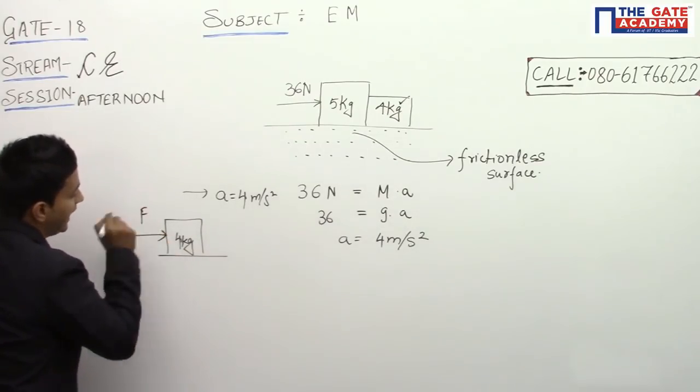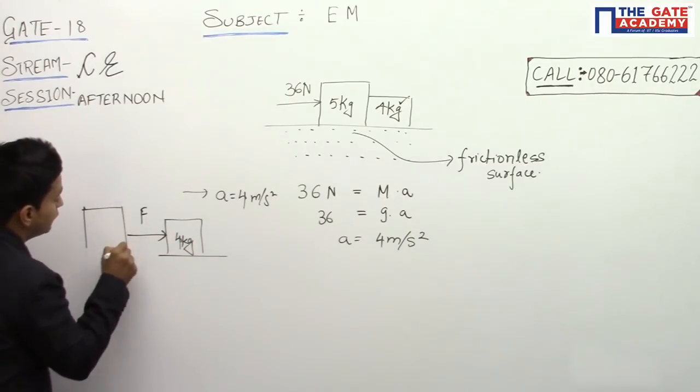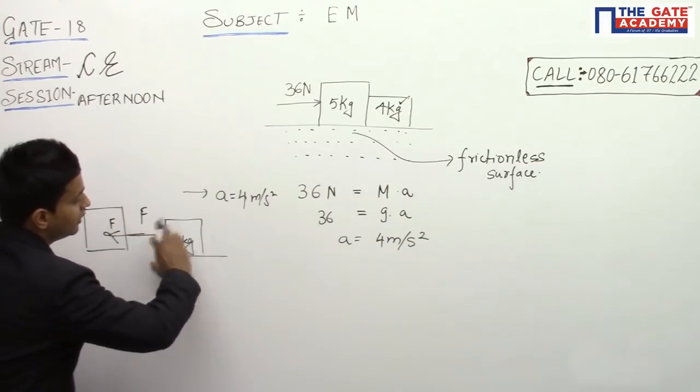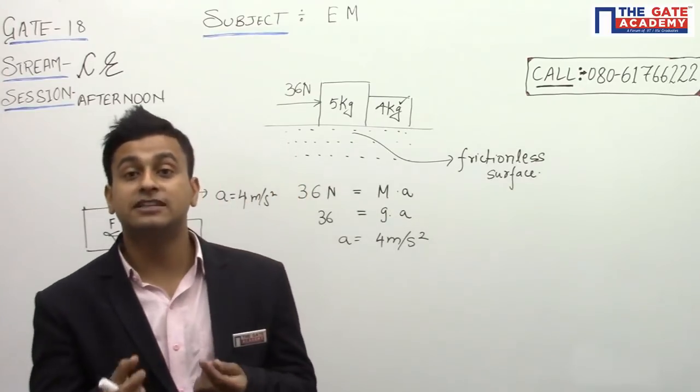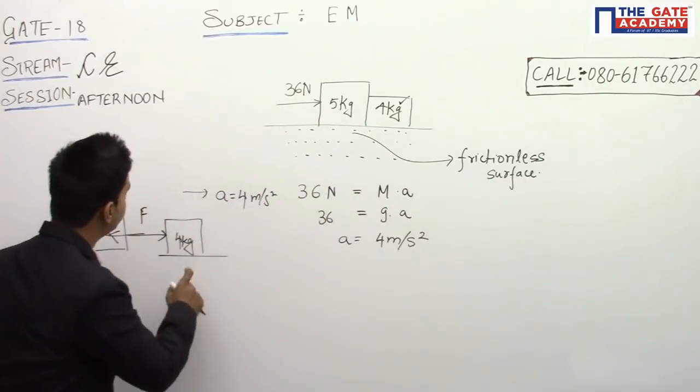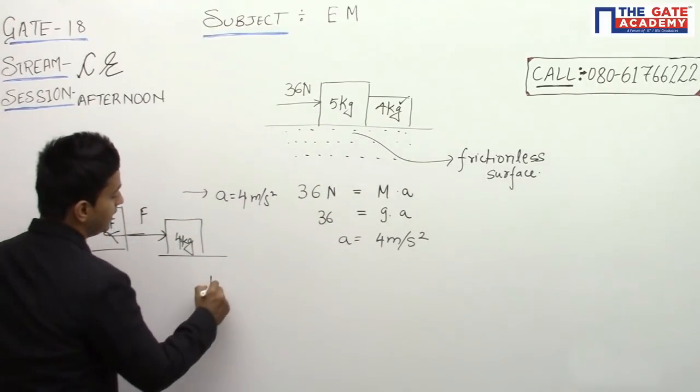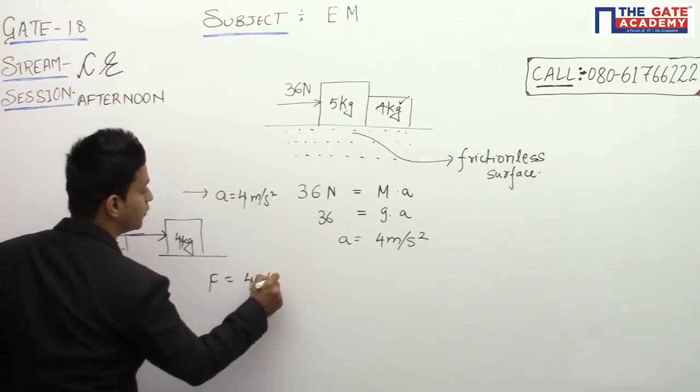be a force F acting in this direction, and that is nothing but the contact force. So the 5 kg body will be here. This will also be acting F in this direction, and F for this will be in this direction. Both, summing up, will cancel each other. That is why that is an internal contact force. So this F will be equal to mass into acceleration. We can easily apply that: 4 into 4, which will